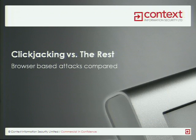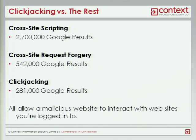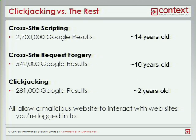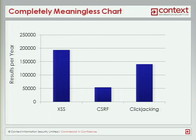To fully understand why clickjacking is important, we need to compare it to other browser attacks. Some of the attacks that take place in the browser are cross-site scripting and cross-site request forgery. I decided to Google these and see how many results I got for each. Cross-site scripting is by far the most popular in terms of Google results, and the other two have fewer results, with clickjacking at the least. If we look at how long these attacks have been around — these are rough estimates — cross-site scripting and cross-site request forgery are fairly old attacks, while clickjacking is fairly new. Pretty much the only thing this shows is that although clickjacking has only been around a couple of years, there's a lot of interest in it — possibly because it has a much scarier sounding name than the other two.